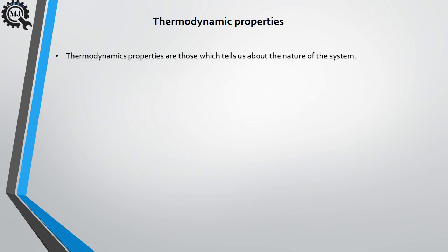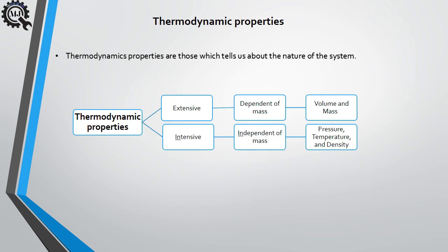Thermodynamic properties are those which tell us about the nature of the system, or we can say they describe the physical condition of the system — like pressure, temperature, volume, etc. There are mainly two types: extensive and intensive properties. Extensive properties generally depend on mass — for example, volume and energy. Intensive properties are always independent of mass — for example, pressure and temperature. Also, extensive property per unit mass is called intensive property — for example, specific volume.